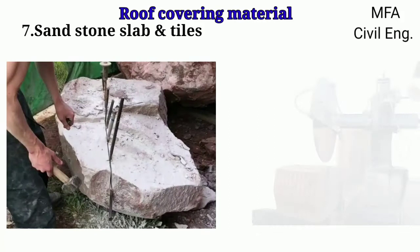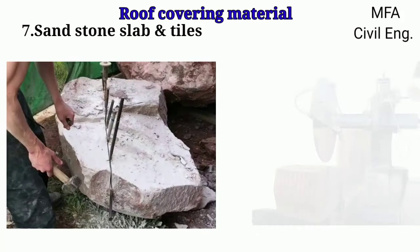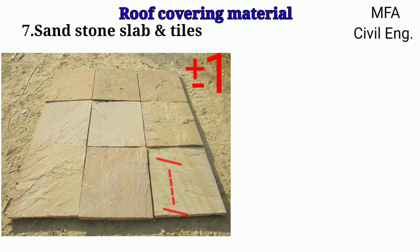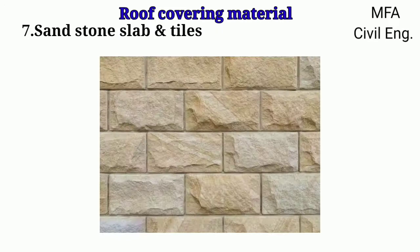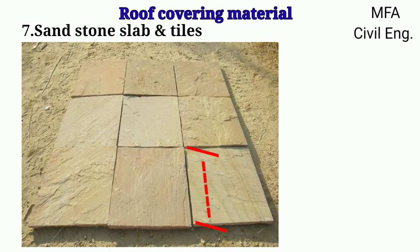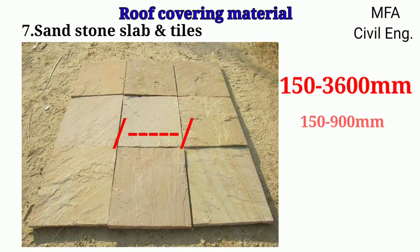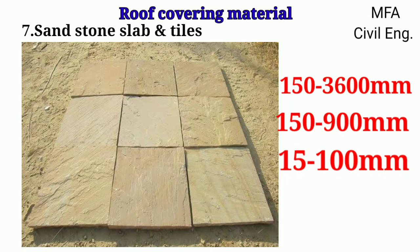Sandstone slabs and tiles can be roughly cut or machine cut. The tolerance limit of plus or minus 1 mm is only permissible in the length and breadth in case of machine cut stone slabs and tiles. These stone slabs and tiles can be used in flooring work, roofing work and facing work. The length varies from 150 mm to 3600 mm, the breadth varies from 150 mm to 900 mm, and the thickness varies from 15 mm to 100 mm.